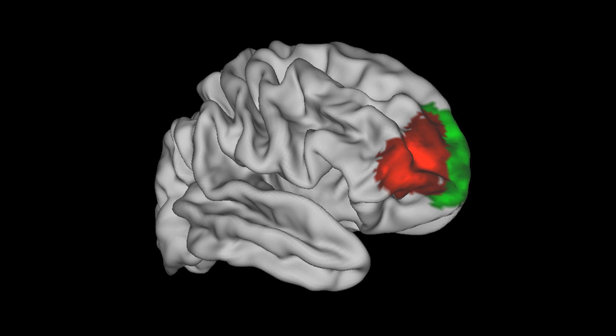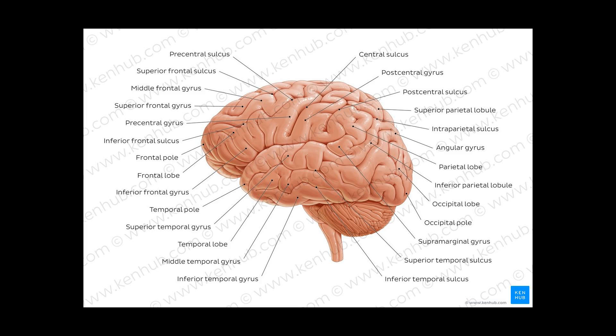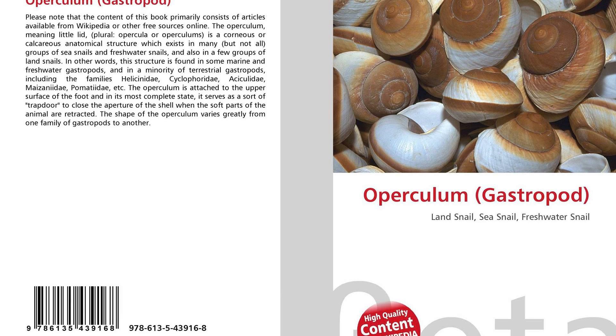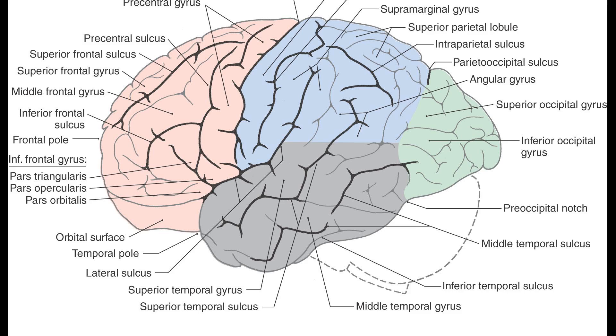The insular lobe is a portion of the cerebral cortex that is invaginated to lie deep within the lateral sulcus. It sits like an island — the meaning of 'insular' — almost surrounded by the groove of the circular sulcus, and covered over and obscured by the insular opercula.